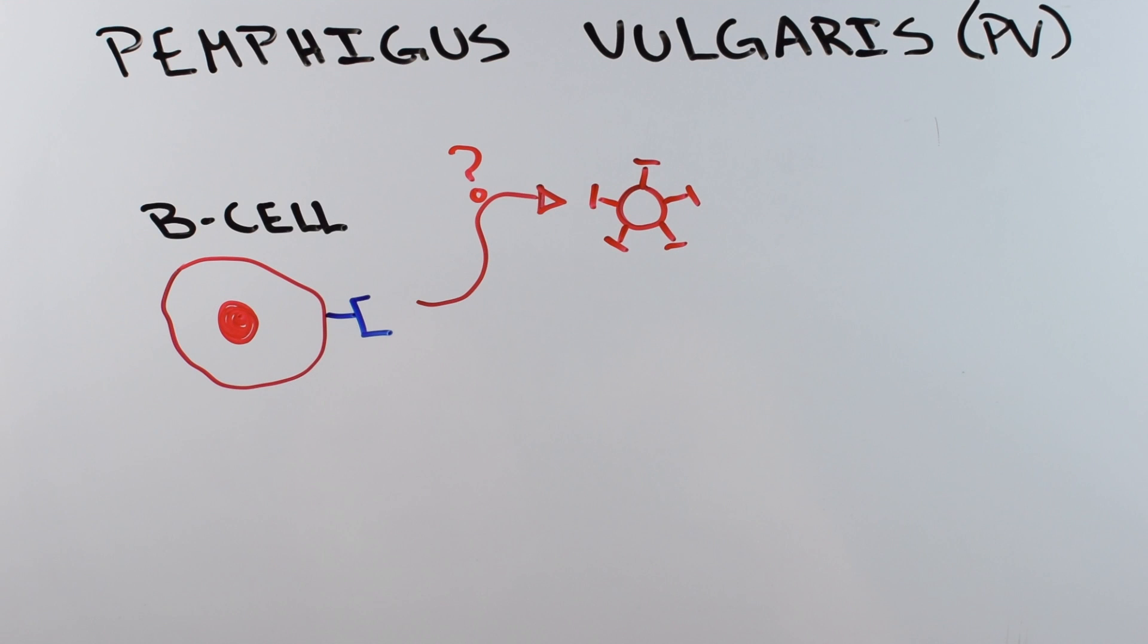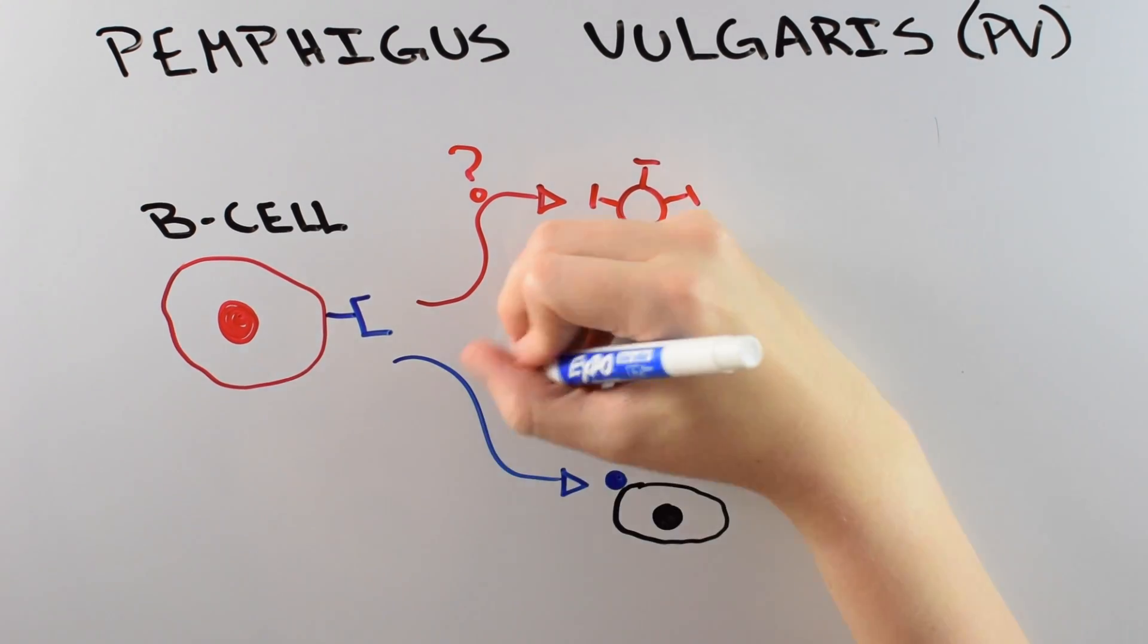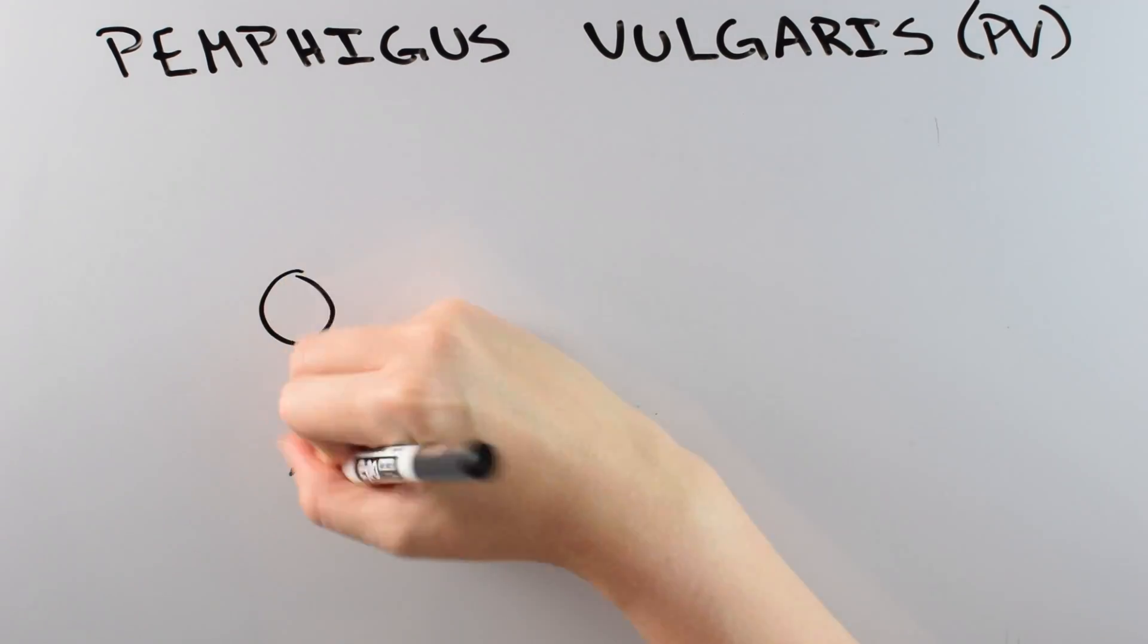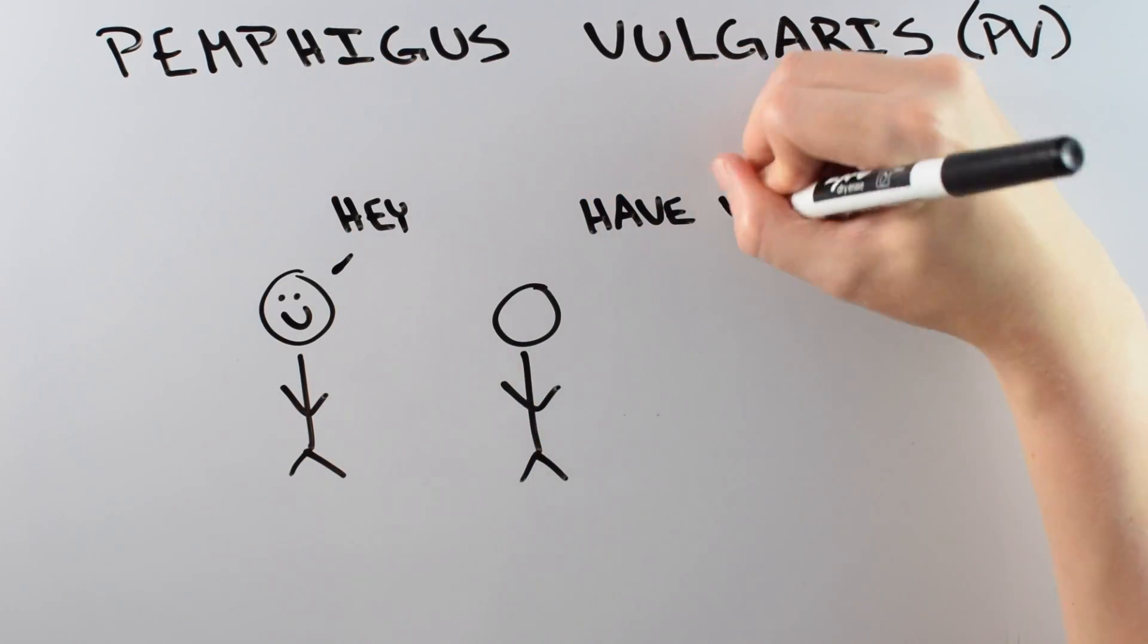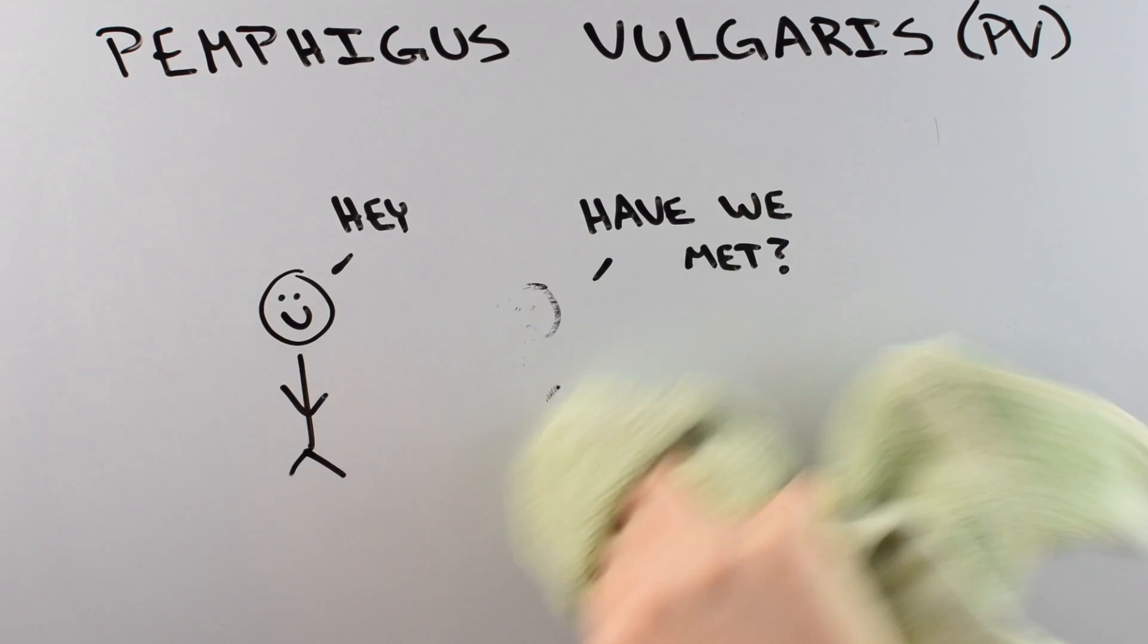But in PV, instead of recognizing an outside invader, these B cells recognize a completely normal skin protein. It's kind of like getting amnesia and forgetting your best friend. People with PV are continually making these B cells that attack their skin.